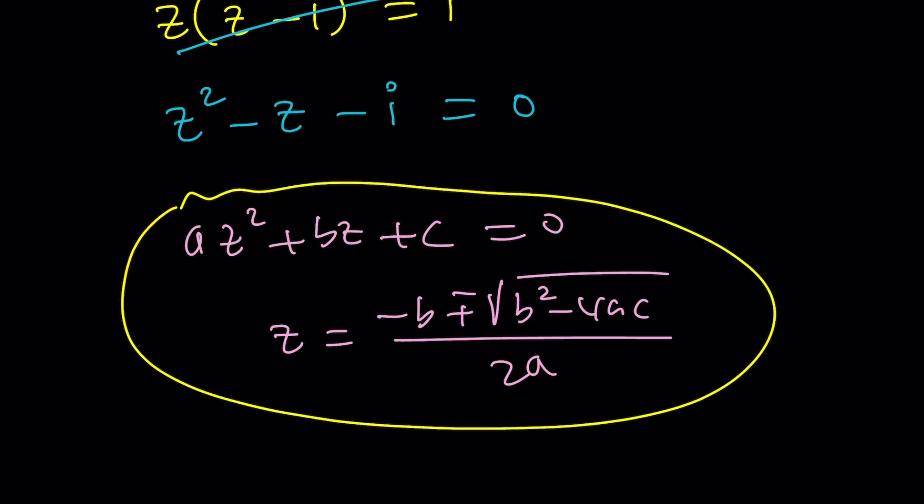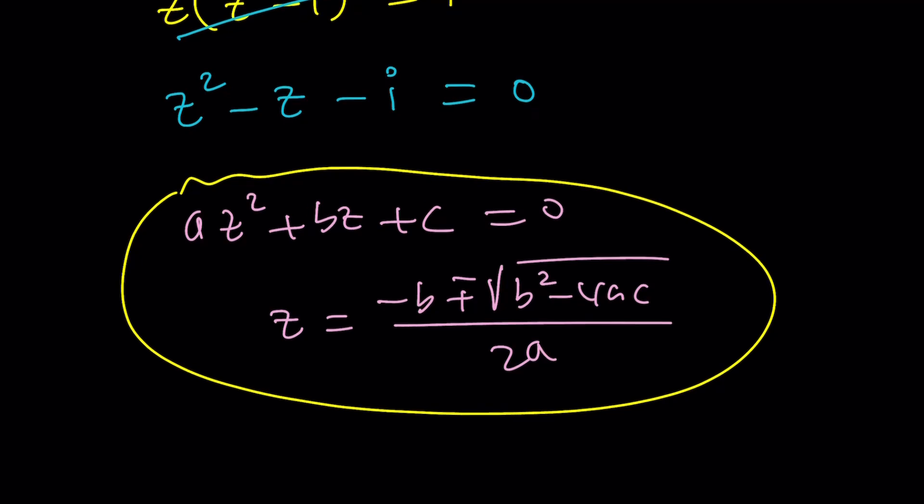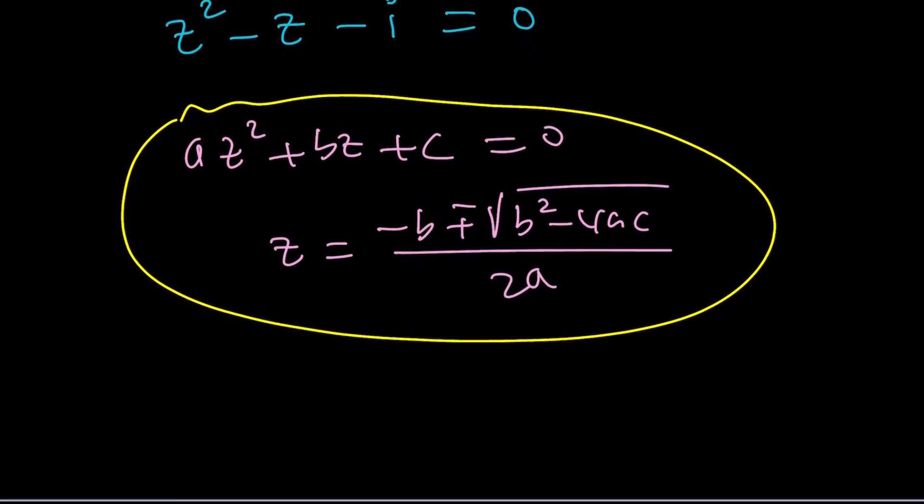Or I should say real and non-real because real numbers are also complex. Anyways, you get the idea. We can go on and use this formula. In this case, a is 1, b is negative 1, and c is negative i.